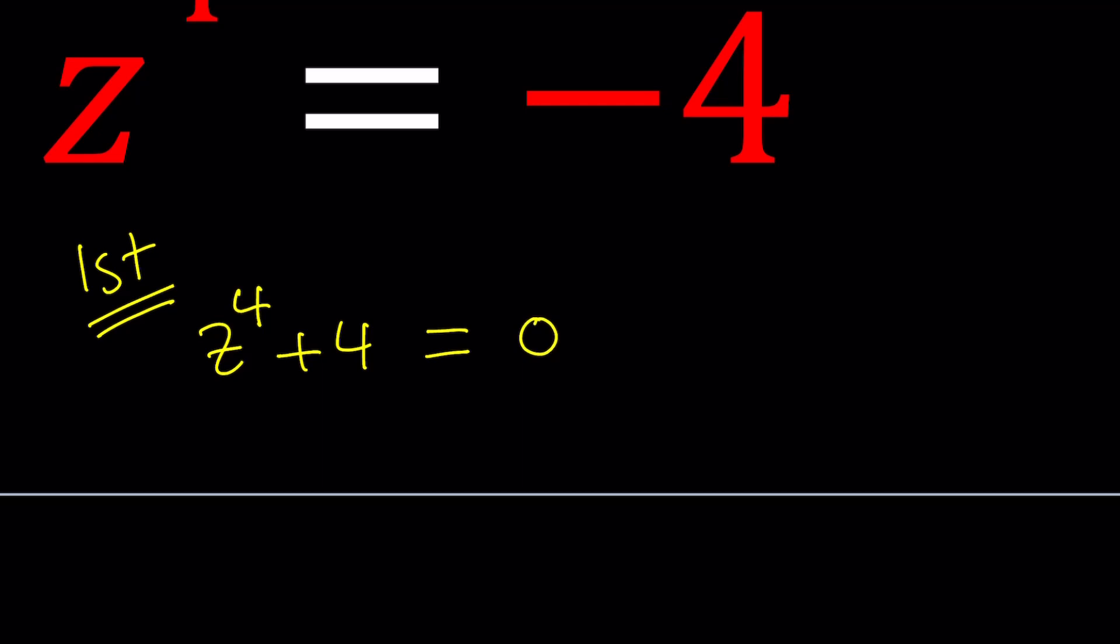So this is a quartic expression. It's kind of like a sum of two squares as well. But guess what? This can be factored using something called Sophie Germain's identity. Sophie Germain is a great mathematician, and we're going to use that identity. How do we use it? We add something to turn this into a perfect square.